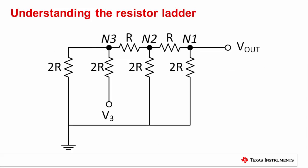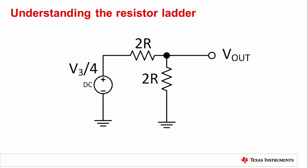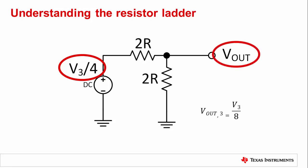Finally, we'll look at the last arm's contribution, applying all the methods we've used so far. First, we make a cut line to insert a Thevenin equivalent circuit at node 3 and combine the resulting resistor with the one in the ladder. Now we will repeat this process by making another cut line, replacing with the Thevenin equivalent, and combining the resistors. Notice now that the equivalent voltage has become V3 over 4. Finally, we see the simple voltage divider at Vout for a contribution of V3 over 8.